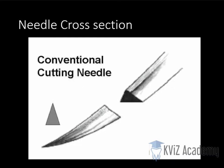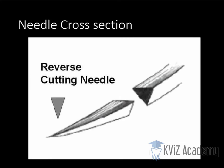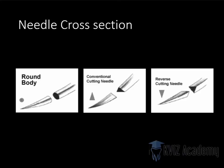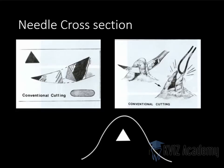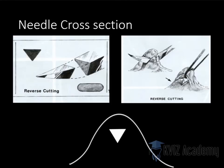Conventional cutting is less desirable; reverse cutting is more desirable. In conventional cutting, when you insert the needle into a dental papilla or any tissue, it leaves one angled corner of the triangle towards the outer margin, so when you tie the suture, it may tear through — it is more traumatic to the tissue. Whereas in reverse cutting, it gives a flat base towards the outer edge, towards the wound edge, so it won't cut through.